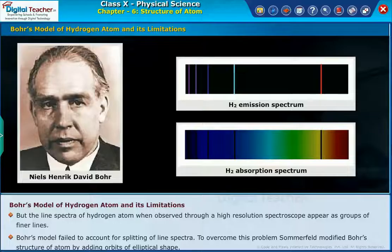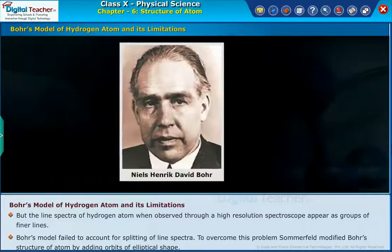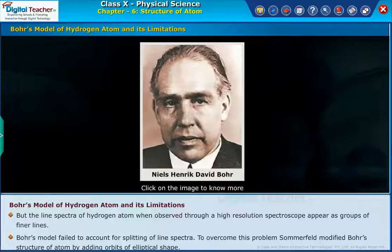To overcome this problem, Sommerfeld modified Bohr's structure of atom by adding orbits of elliptical shape. Click on the image to know about Niels Henrik David Bohr.